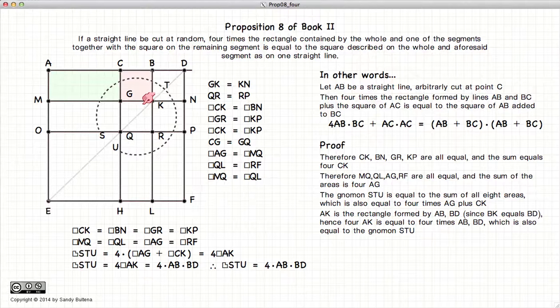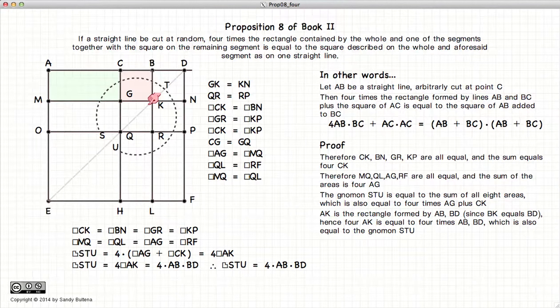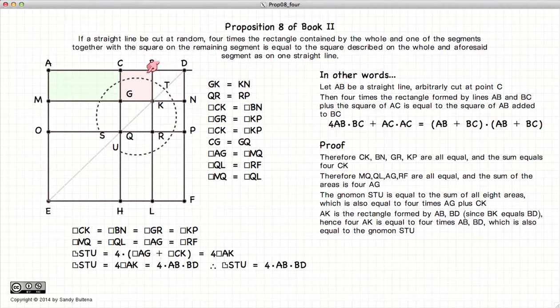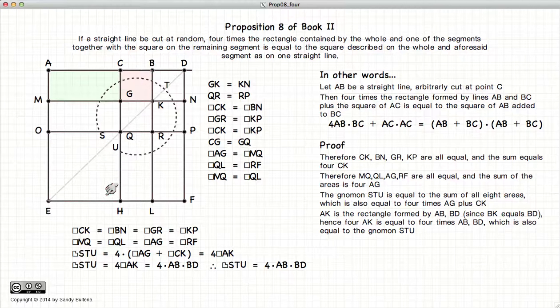And AK is equal to AB times BK. But we know that BK is also equal to BD, which is also equal to BC. So hence, AK is equal to AB times CB. So we have that STU, which was four times AK, which is equal to AB times BD,